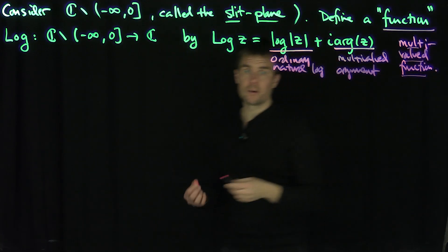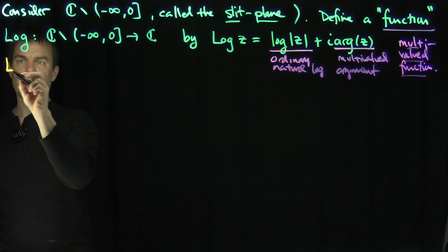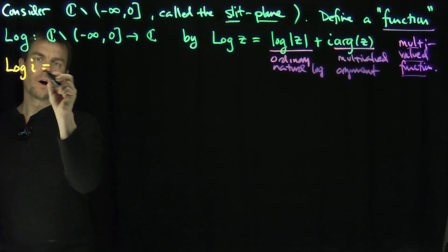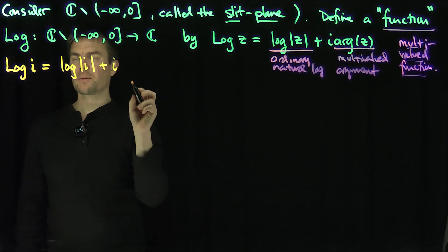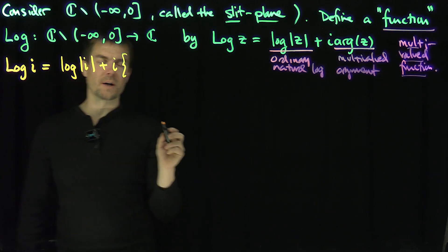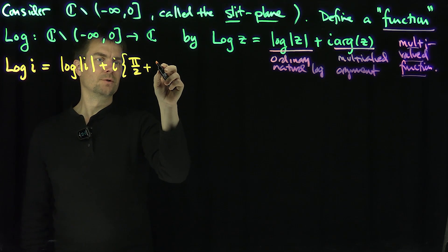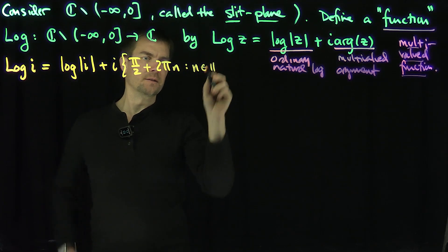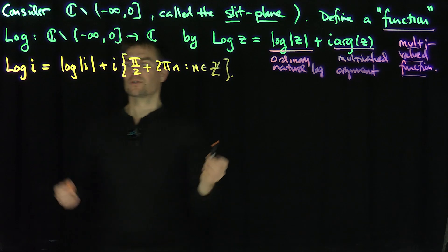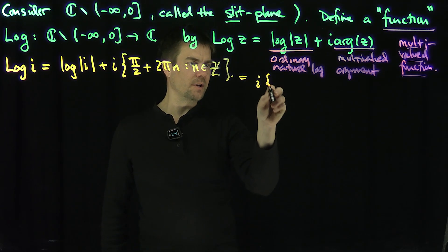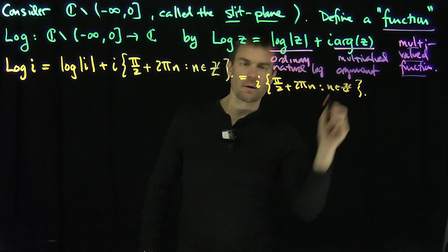Let's see some examples using this multi-valued function. If I wanted to compute the LOG of i, what would that be? LOG of i would be the ordinary log of the modulus of i, plus i times the argument of i. Now it's the set of arguments of i, so I write this as the set of all pi/2 plus 2πn such that n is in Z — an integer. So it's going to be i times the set of all pi/2 + 2πn for n in Z. That's what this multi-valued log gives me.